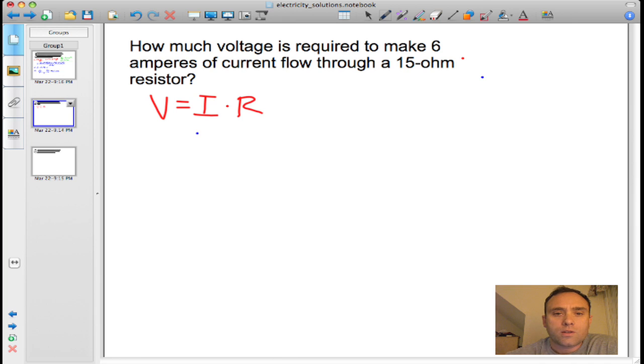As always, it's best to define your variables. So we have a current I of 6 amps. Always keep the units. It makes things a lot easier. And we have a resistance of 15 ohms.